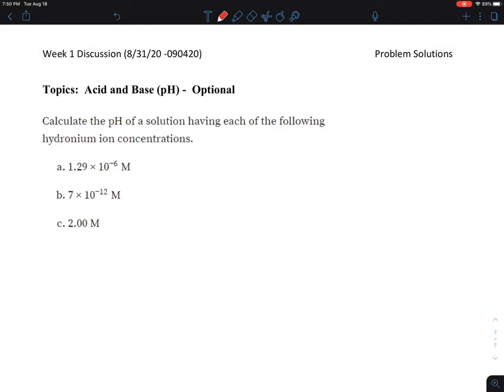The problem says calculate the pH of a solution having each of the following hydronium ion concentrations. So let's try to understand what we mean by hydronium ions.